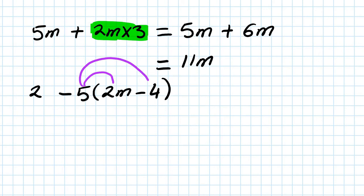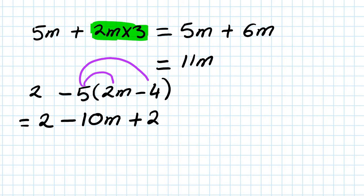So we write the 2 down first, then minus 5 times 2 is minus 10, so that means minus 10m. Minus 5 times minus 4 — negative times negative gives you a positive — so minus 5 times minus 4 is 20.